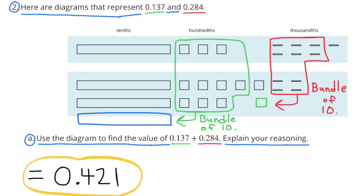Since there were 11 squares underneath the hundredths section, I bundled up 10 of them and traded them in for one of the longer shapes underneath the tenths section, leaving me with just one square left in the hundredths section. In the thousandths section, I bundled up 10 of them and traded them in for another square in the hundredths section. So, now there's two squares in the hundredths section. I have 421 thousandths.